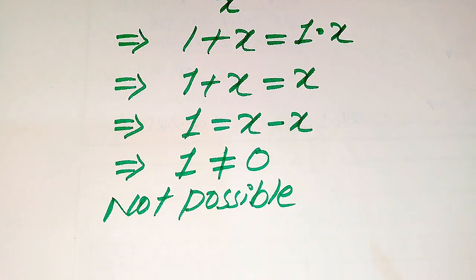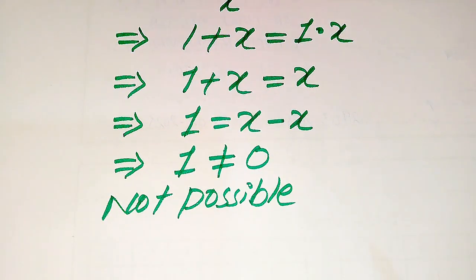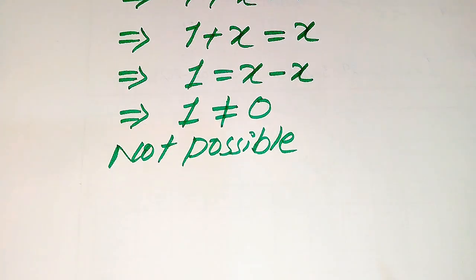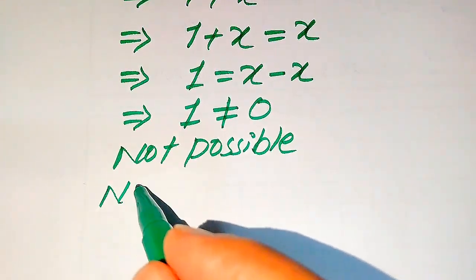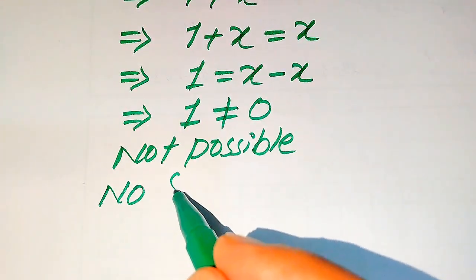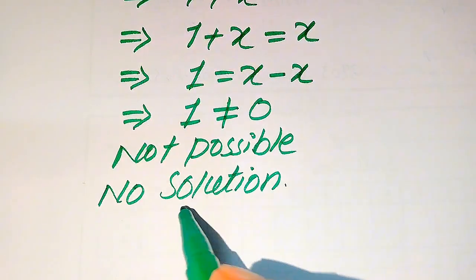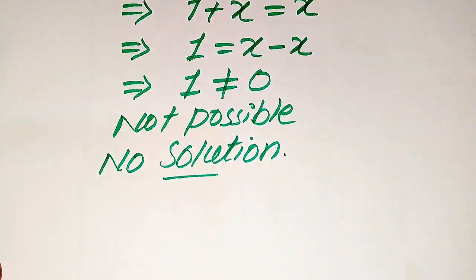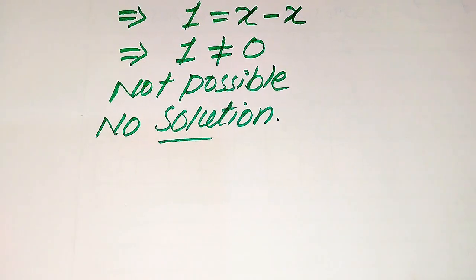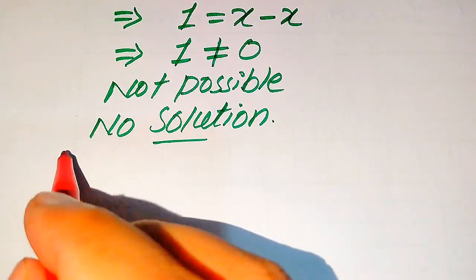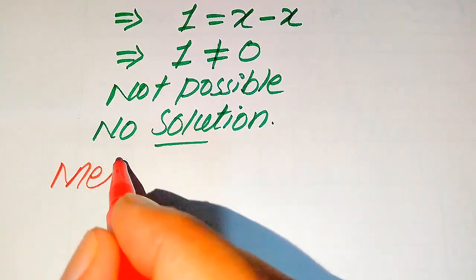We cannot get any value of x from the first method. This means that this question has no solution and no extraneous root. The final conclusion from the first method is that this equation has no solution. Now we solve this problem again using the second method.